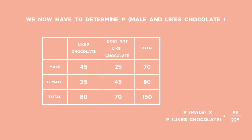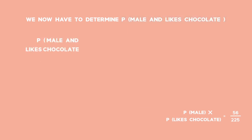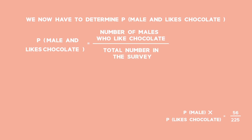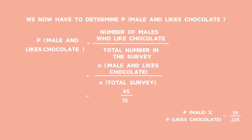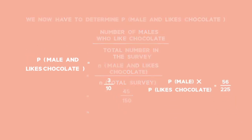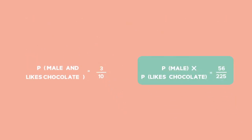We now determine the probability that if we randomly select one of the people surveyed, that person is male and likes chocolate. We use the formula: P(male and likes chocolate) = number of males who like chocolate divided by the total number in the survey = 45 divided by 150, which equals 3 over 10. Since P(male) × P(likes chocolate) = 56 over 225, and P(male and likes chocolate) = 3 over 10, these are not equal. Therefore, the events being male and likes chocolate are not independent.